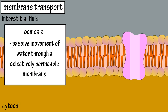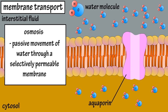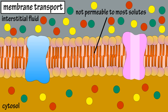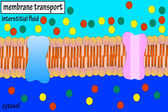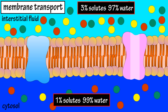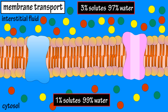Osmosis is the passive movement of water through a selectively permeable membrane. This occurs when there is a difference in concentration of water on either side of the membrane. Water can slip between the phospholipid molecules of the plasma membrane, or through integral protein water channels called aquaporins. The plasma membrane is not permeable to most solutes, such as charged, polar, and large substances. For example, if the interstitial fluid has 3% solutes and 97% water, and the cytosol has 1% solutes and 99% water, water will move down its concentration gradient from the 99% cytosol side to the 97% interstitial side to achieve equilibrium.